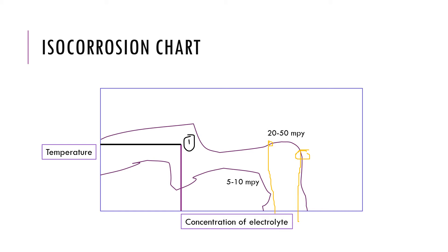So when you know that the application is going to have a certain temperature and concentration, you can estimate what the approximate corrosion rate is going to be. You can also use this plot to select the alloy.